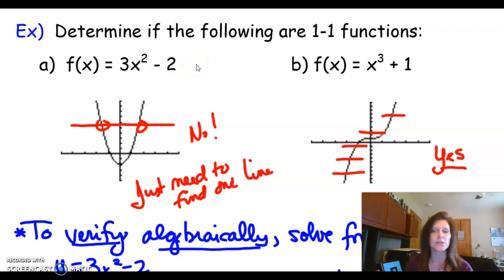Alright, so if I'm asked to determine if something's one-to-one and I have the graph, it's easy. I just look to see, can I draw a horizontal line and touch it more than once? If so, as in this first case, it's not one-to-one. If in this second case, I see that no, I don't touch it more than once, then we would say yes.